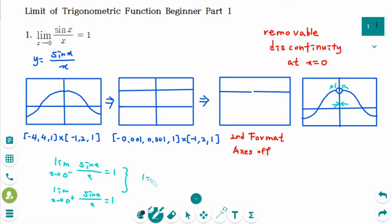Therefore, the limit as x approaches 0 of sin x over x equals 1. That is the final answer.